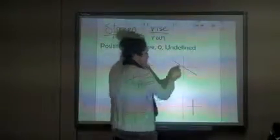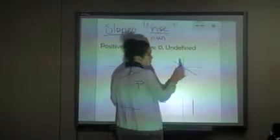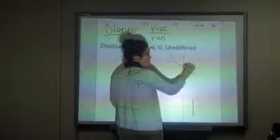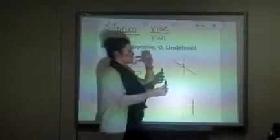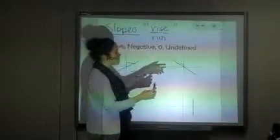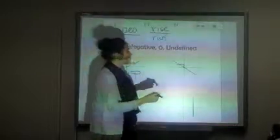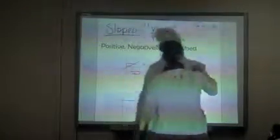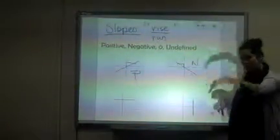This one — you would rise to get to one mark, but then you run this way, which is to the left. So one of them is positive, the other one is negative, giving you a negative slope. And think about it — you're going downhill, so it's negative.